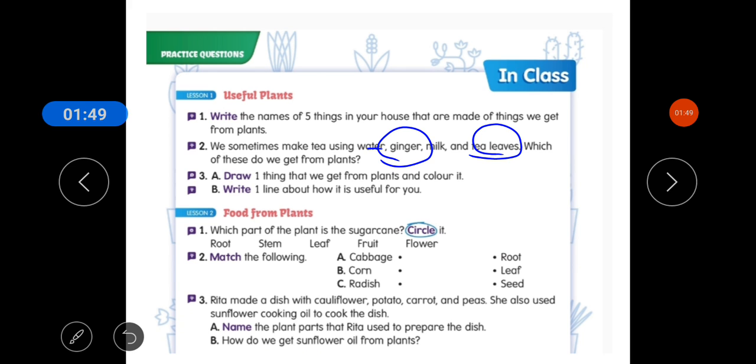So you have to draw one thing that we get from plants and you have to colour it. And so what is useful to make furniture? So what is useful to make furniture? You have to make medicine number 2 food from plants. First question is which part of the plant is the sugar cane? Circle it.